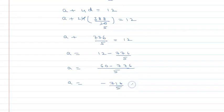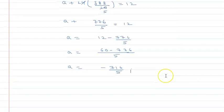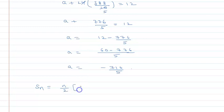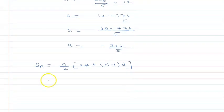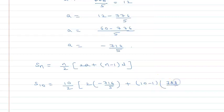So 776 and 60, so this is negative 716 divided by 5. So a we have, d we have. What do I need? S10. Sum of n terms formula is n by 2 into 2a plus (n-1) into d. So I need S10. So S10 will be equal to 10 upon 2.